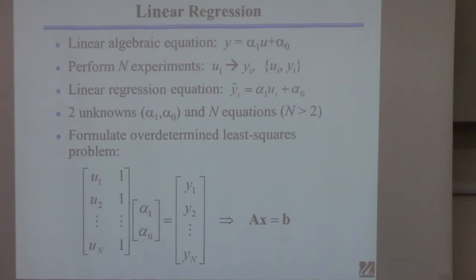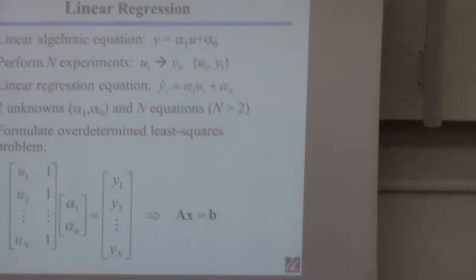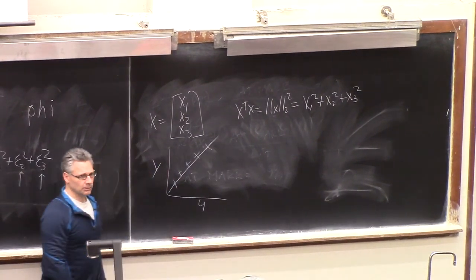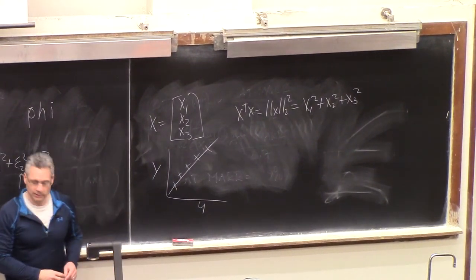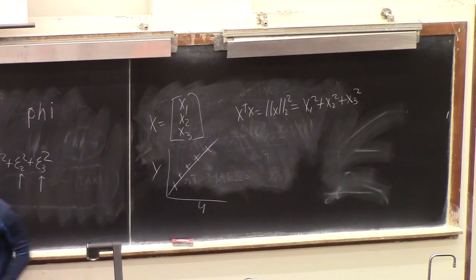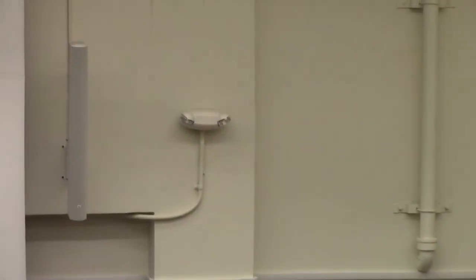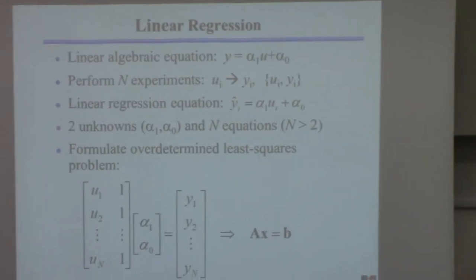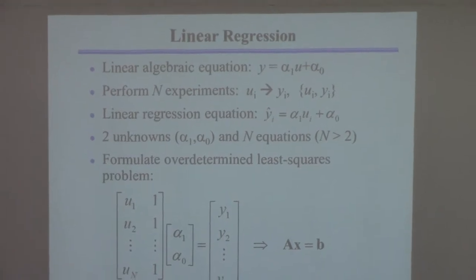You've already done this and your calculator does this — you take your data, plot U on one axis and Y on the other, have some data points, and you want to fit a line through them. What we're going to do is form a set of linear algebraic equations and then use the method of overdetermined least squares to solve it.